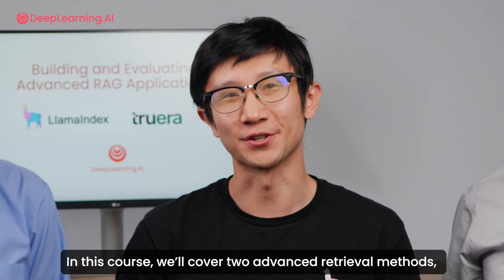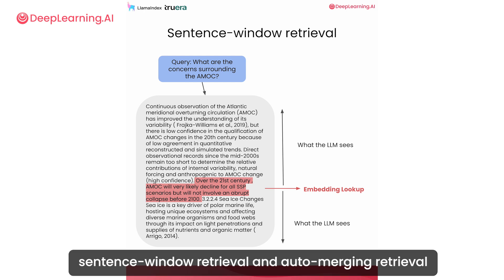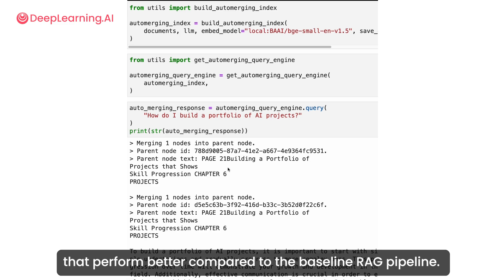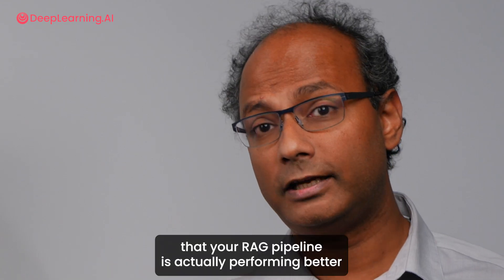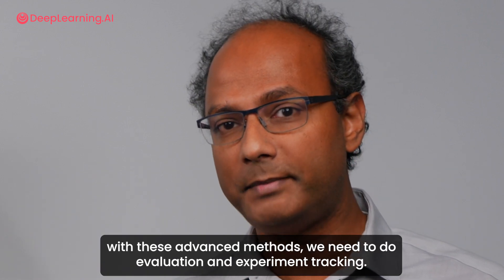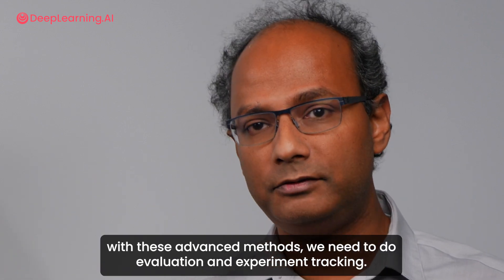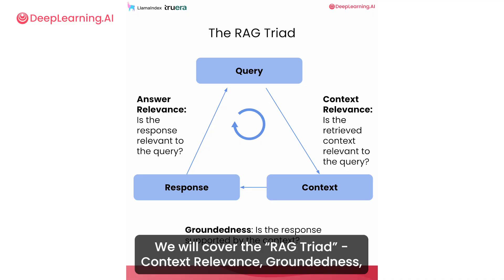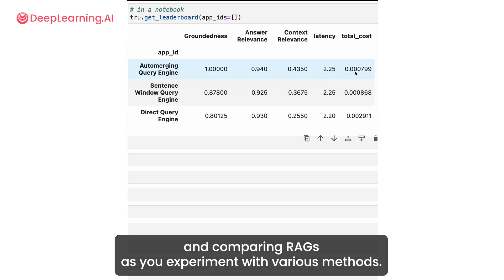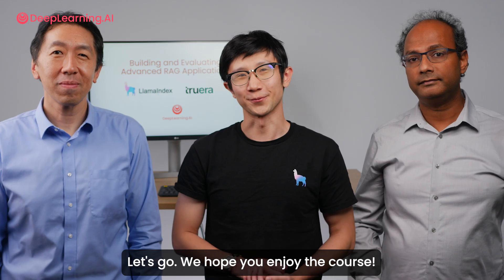In this course, we'll cover two advanced retrieval methods — sentence window retrieval and auto-merging retrieval — that perform better compared to the baseline RAG pipeline. To make sure that your RAG pipeline is actually performing better with these advanced methods, we need to do evaluation and experiment tracking. We will cover the RAG triad: context relevance, groundedness, and answer relevance, that are effective in programmatically evaluating and comparing RAGs as you experiment with various methods.